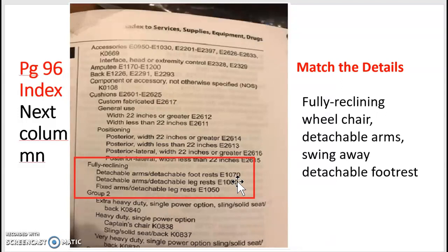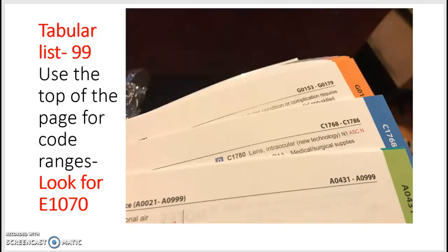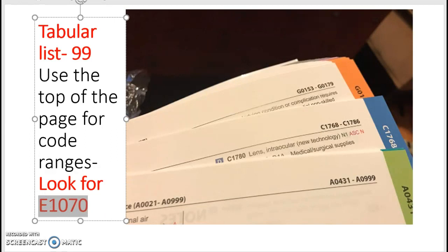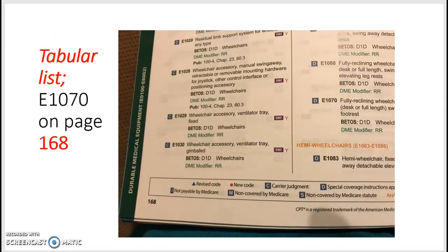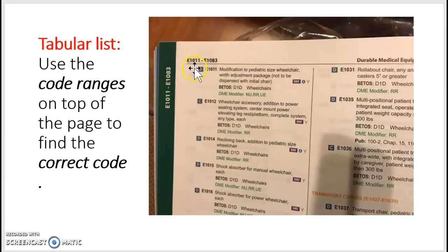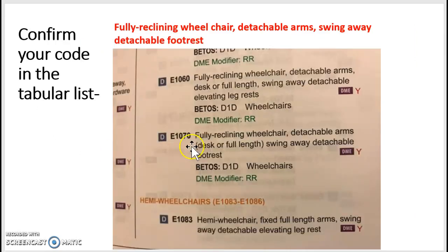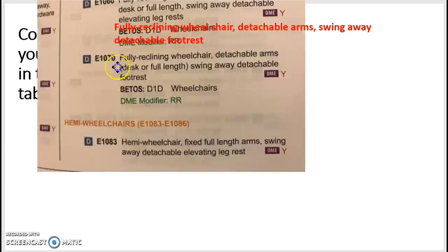Under 'fully reclining' we see additional subterms: detachable arms and detachable footrest, and that takes us to E1070. There's just one code given, not a code range — that's straightforward. Now I have to go to the tabular list to find the code. The tabular list begins from page 99, so start there and look at the tops of the pages as you turn them to locate E1070.